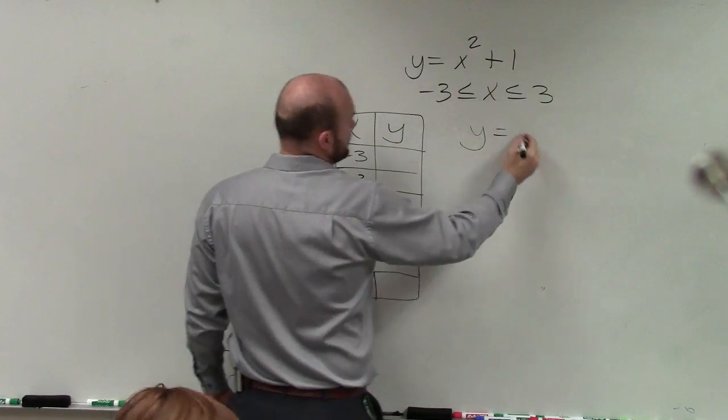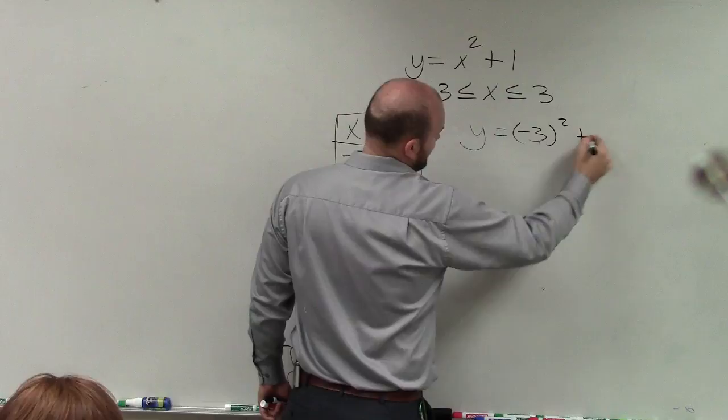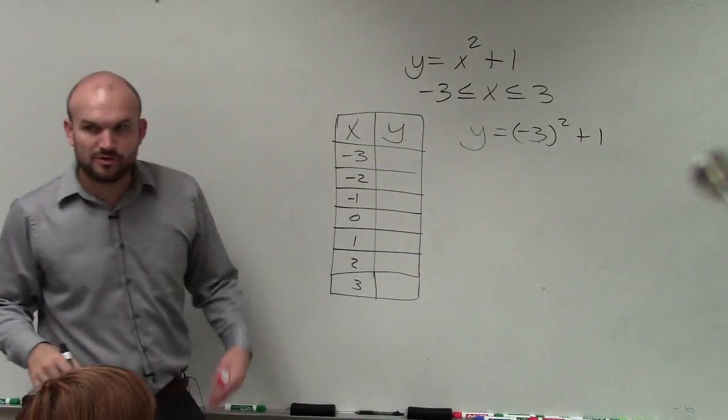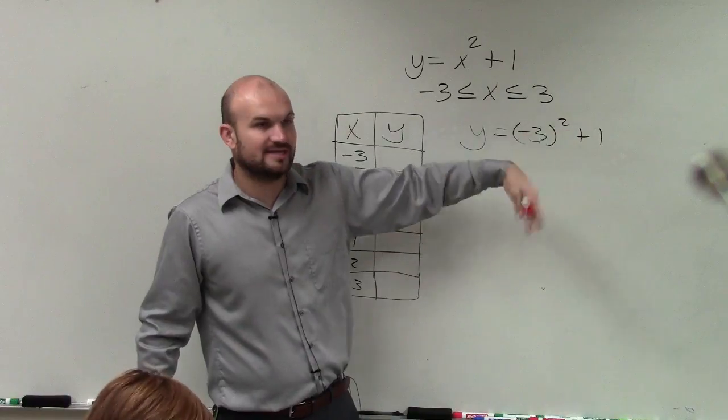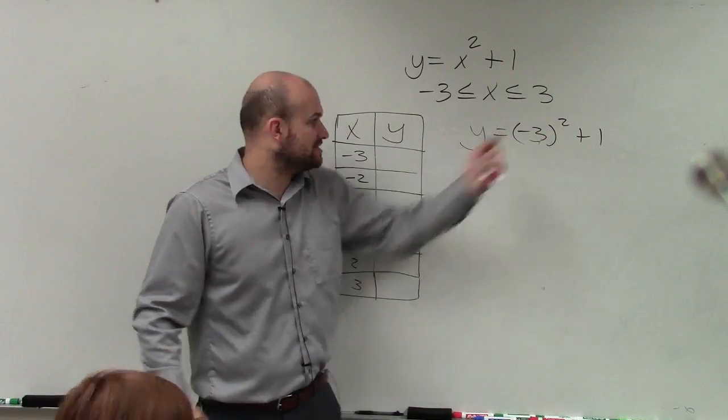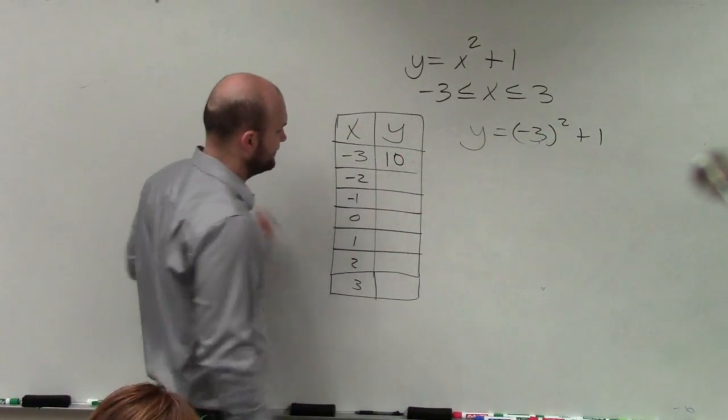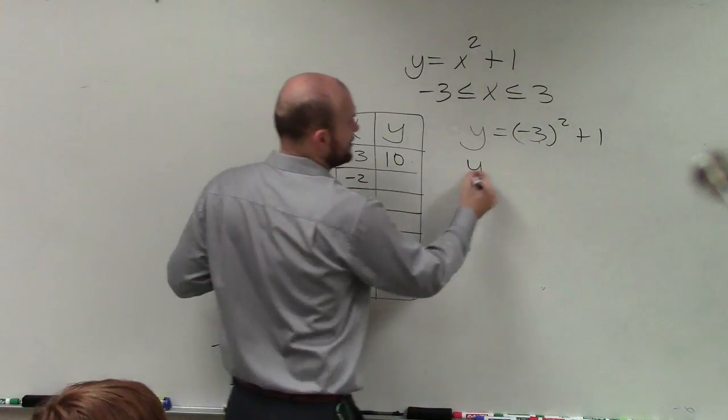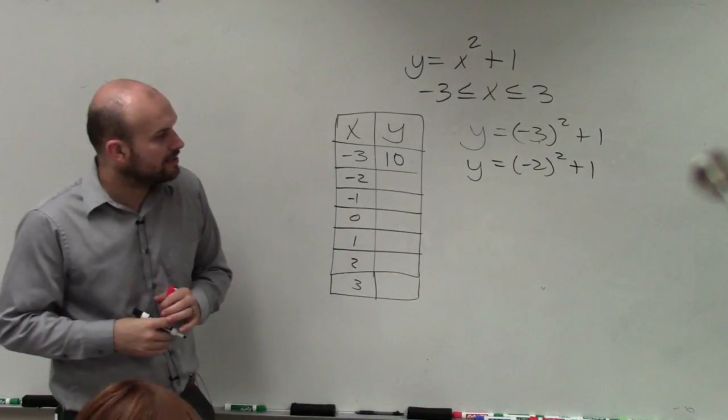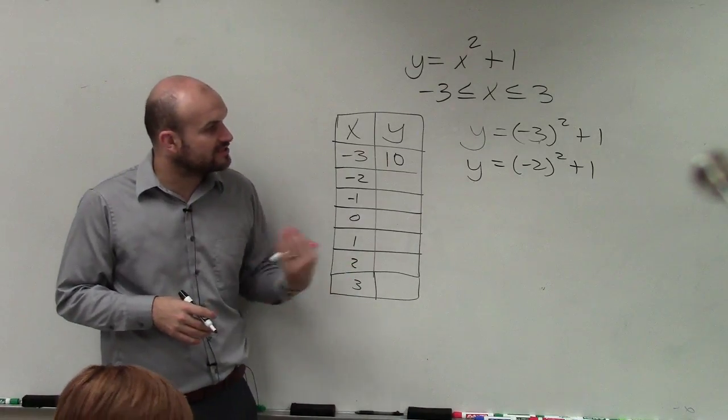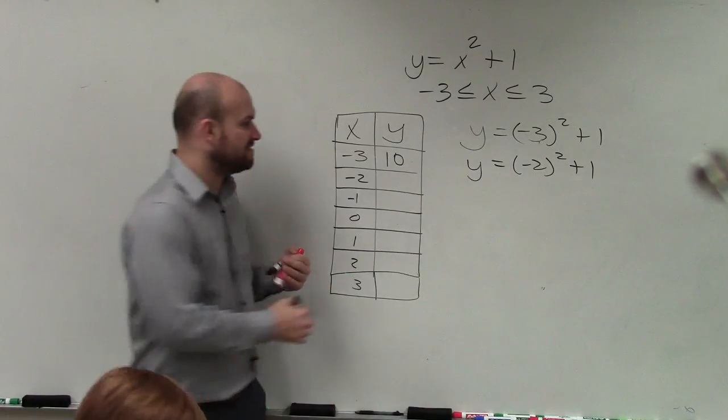I'll do just the first couple for you. And then when you guys are doing this on your own, you can do this in a quicker manner. But negative 3 squared is positive 9. 9 plus 1 is 10. And then you just move on to the next one. Negative 2 squared is 4 plus 1 is 5.